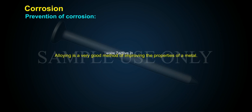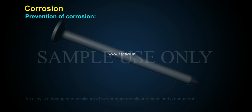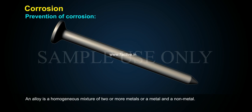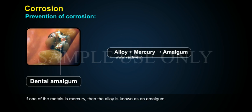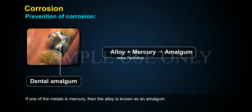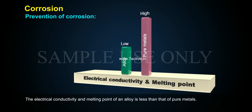Alloying is a very good method of improving the properties of a metal. An alloy is a homogeneous mixture of two or more metals, or a metal and a non-metal. If one of the metals is mercury, then the alloy is known as an amalgam. The electrical conductivity and melting point of an alloy is less than that of pure metals.